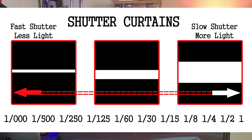Lastly, let's move on to shutter speeds. Faster shutter speeds let in the least amount of light, but it also stops action. Slower shutter speeds let in the most amount of light, but it also shows motion. And make sure if you're shooting with shutter speeds below 1/60th of a second, you're on a tripod.